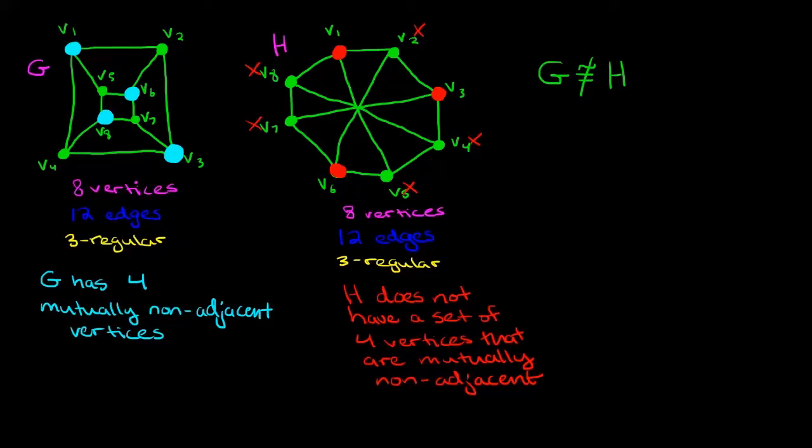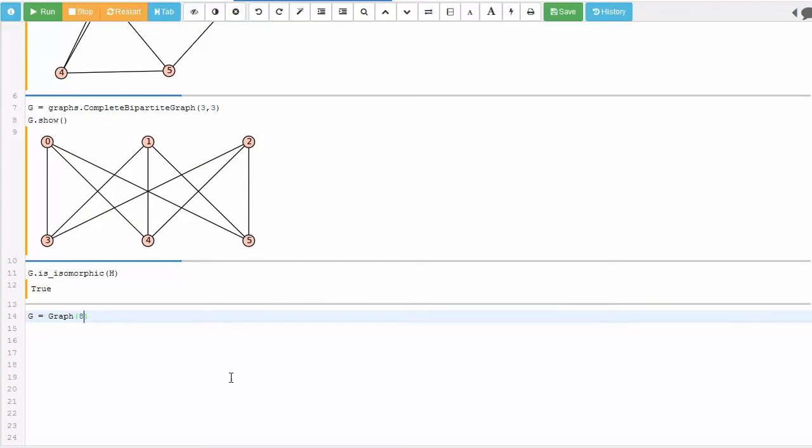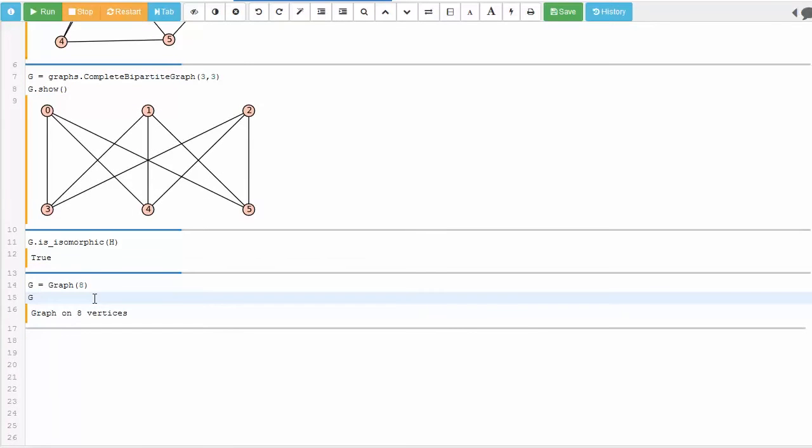That was the graph we called G. We know that it had eight vertices and rather than using its adjacency matrix to represent it in SAGE, what I'm going to do is start by just making a graph on eight vertices and then one by one I'm going to tack on the edges. So I use G dot add edge and I have to put in every edge manually. Now I'm not going to call the vertices V1 through V8 as I did in the video. Here what I'm going to do is label those vertices 0 through 7.